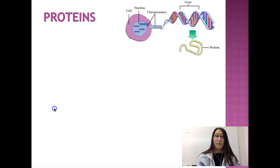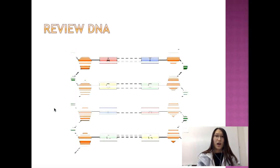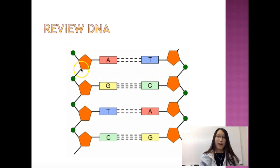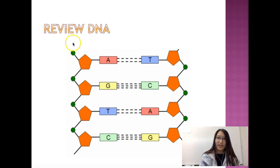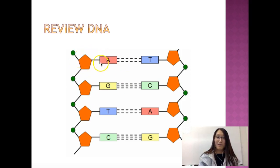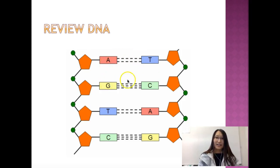Let's first take a look at this quick review of DNA structure. We have the phosphate group, which points outward, and they're the ones connecting each strand of DNA. Each nucleotide is connected through the phosphate group. Then you have the five-carbon sugar — in terms of DNA it's called deoxyribose — and we have the bases facing each other: the complementary base pairs of DNA, A, T, C, and G.